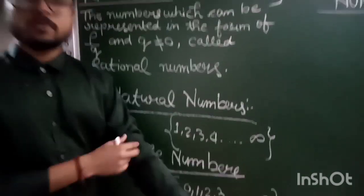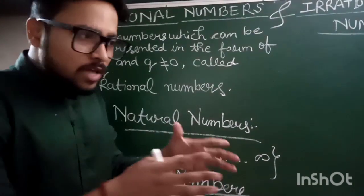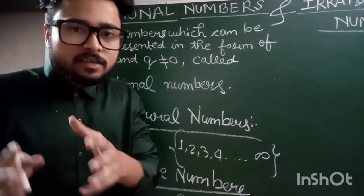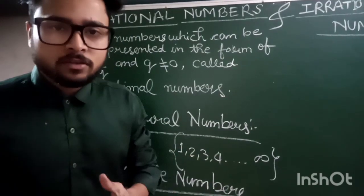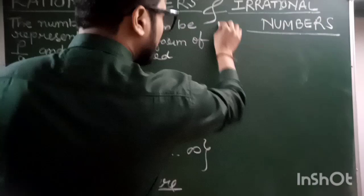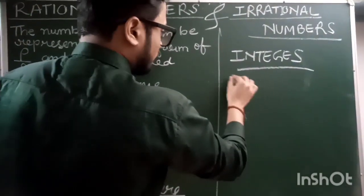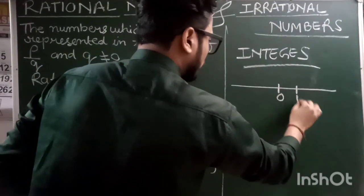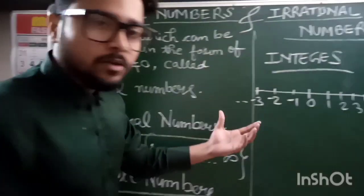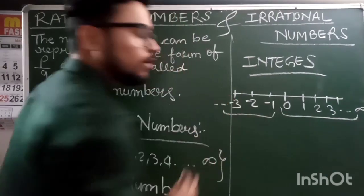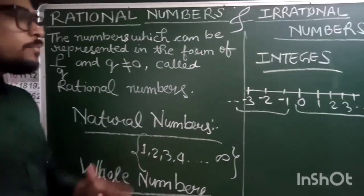Similarly, we need to understand integers. If the negative set of natural numbers is included with the set of whole numbers, then the complete family is considered as integers. On a number line, we have 0, 1, 2, 3 to infinity, and also minus 1, minus 2, minus 3 to negative infinity — this is the family of integers.